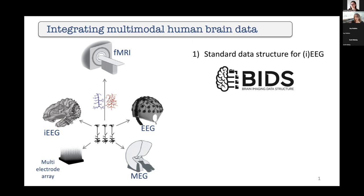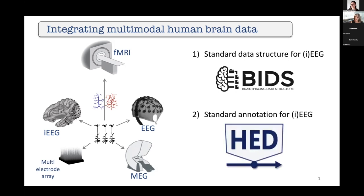To give a little bit of background, I first want to introduce some background about the BIDS work that we did to extend BIDS to intracranial EEG in particular. It then becomes much clearer why it's so essential to also do these HED tags and specifically an HED schema library.